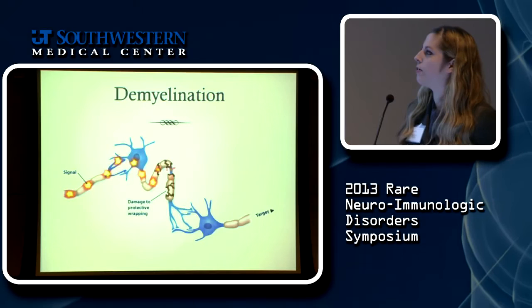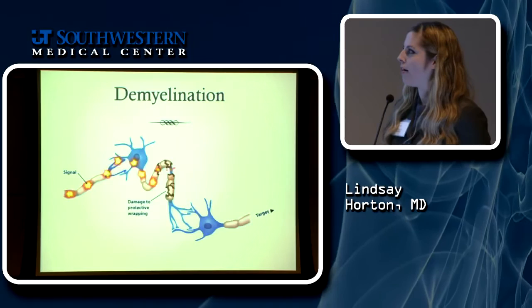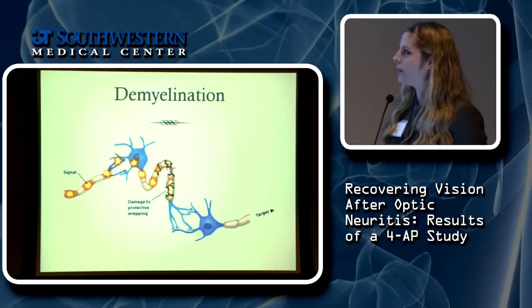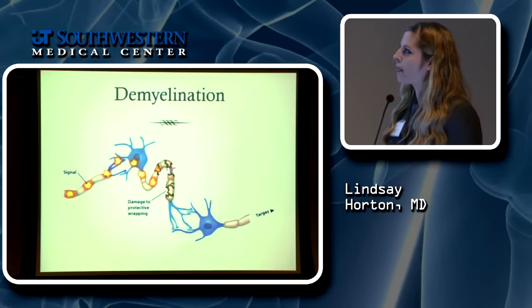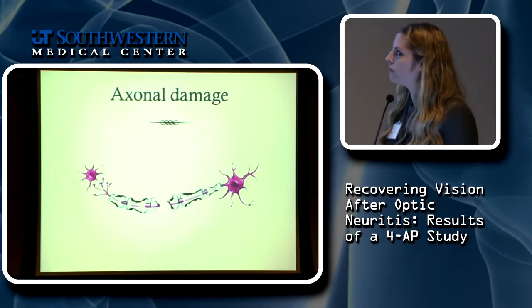This picture represents what demyelination might look like. You have the myelin intact and the signal traveling quickly because the insulation helps it travel. In the middle, you have damage to the protective coating, so the signal has more difficulty getting through. You could also have axonal damage — the entire nerve itself is damaged — which is more severe because the signal would not be able to get through at all.